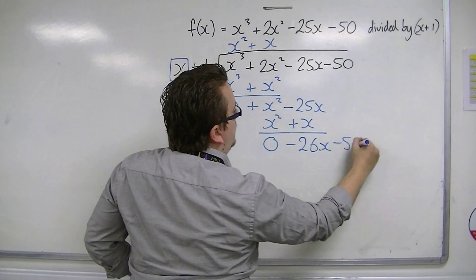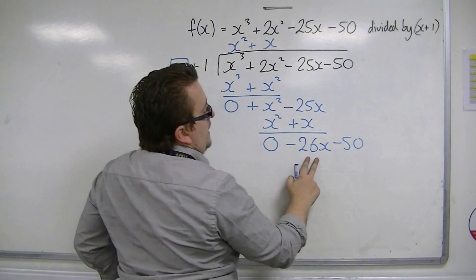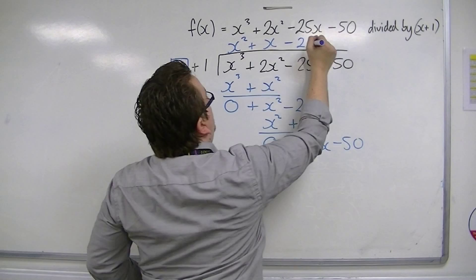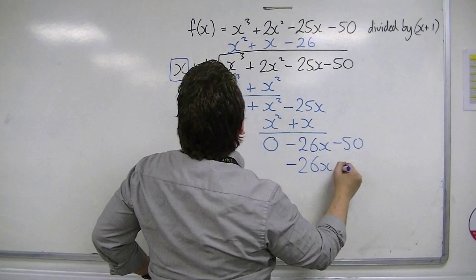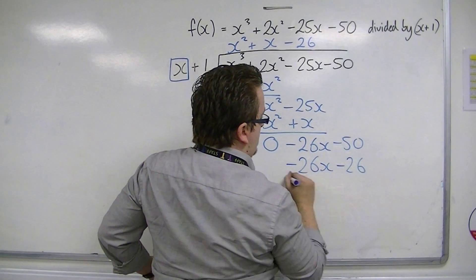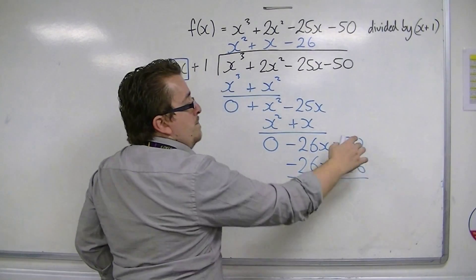Bring the minus 50 down. x's into minus 26x is minus 26. Minus 26 times these two terms gives minus 26x, so we get 0.